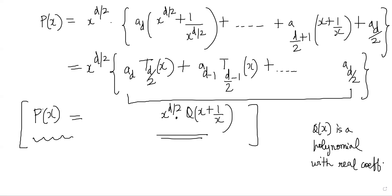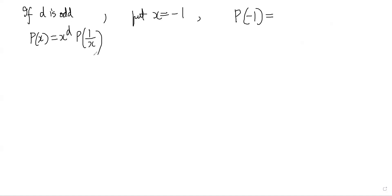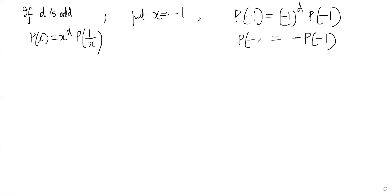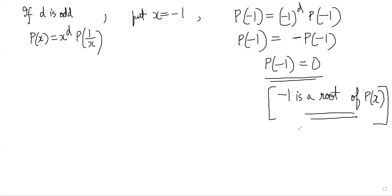Now what about the case where the polynomial has odd degree? If d is odd, put x = -1. We find P(-1) = (-1)^d * P(-1). Since d is odd, this gives P(-1) = -P(-1), which implies P(-1) = 0. So minus 1 is a root of P(x). If you have a self-reciprocal polynomial with odd degree, -1 is guaranteed to be a root.